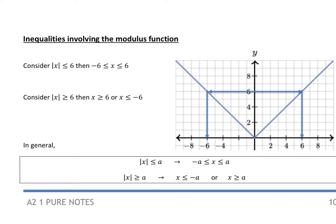Consider modulus of x is less than or equal to 6. Just like the x squared example, take the positive version: x is less than or equal to 6, and the negative version gives x is greater than or equal to minus 6. Those can be pushed together as minus 6 is less than or equal to x is less than or equal to 6.